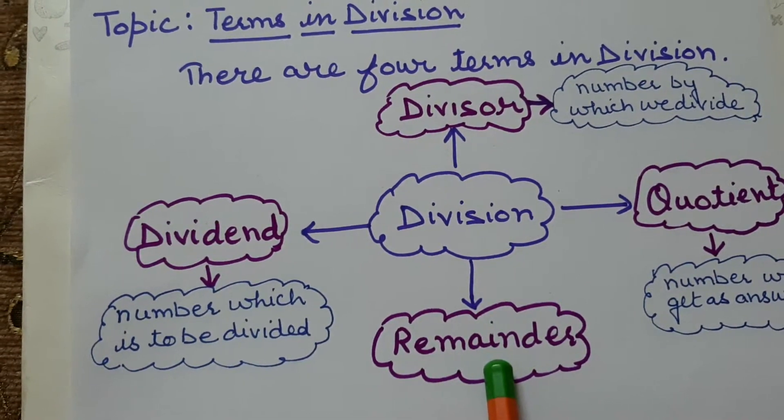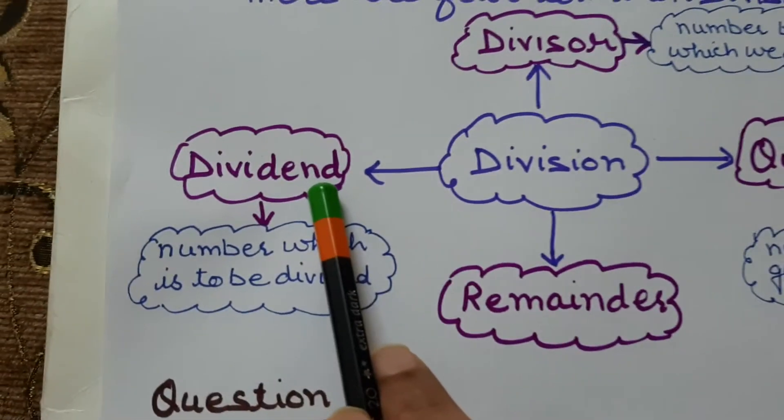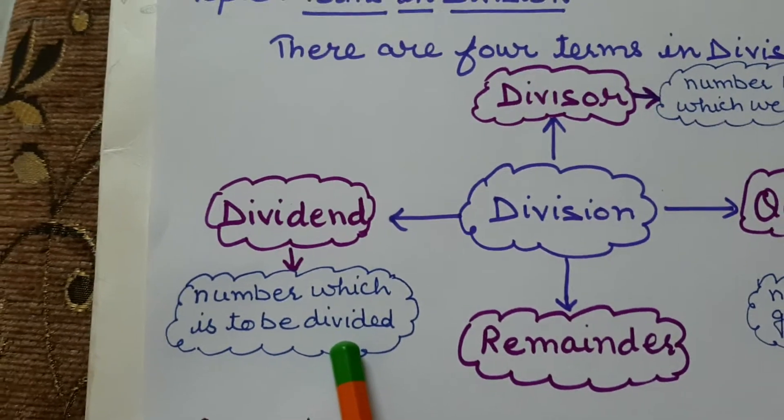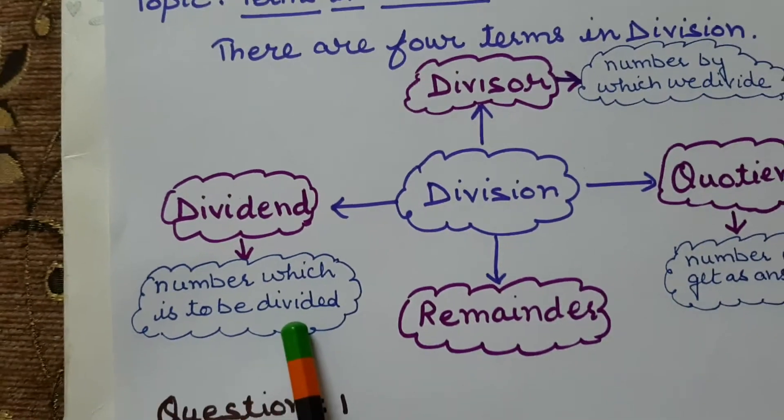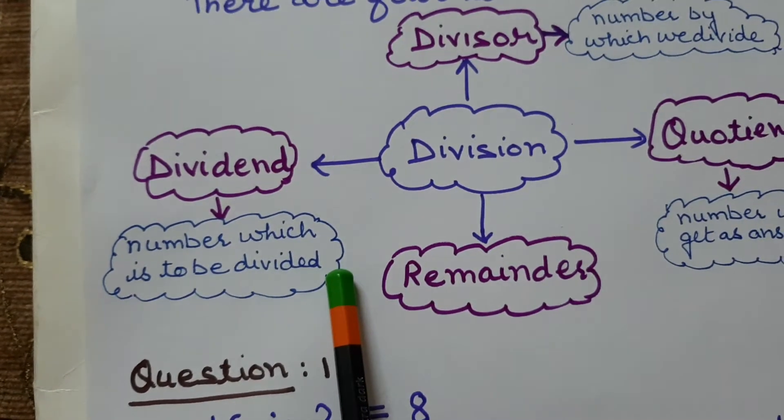Now what are these terms? Let's see. Dividend. Dividend is the number which is to be divided. Dividend is the number which is to be divided.